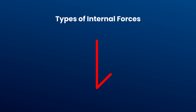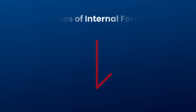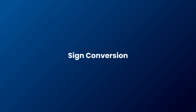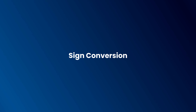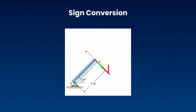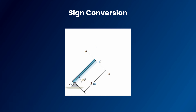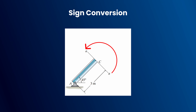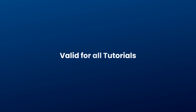We should always mark shear forces using a half arrow. There is a method called sign convention to determine whether shear and moment are positive or negative. If a shear force tends to rotate the beam clockwise around its fixed point, it should be taken as positive. If the moment tends to rotate the beam anticlockwise around its fixed point, it should be taken as positive. I will use this method for all my future tutorials.